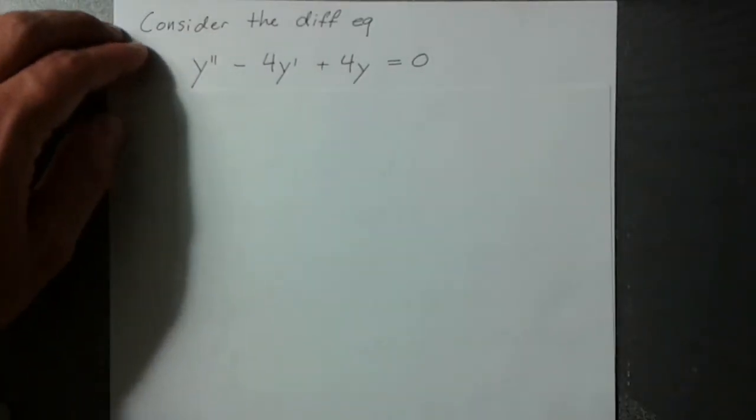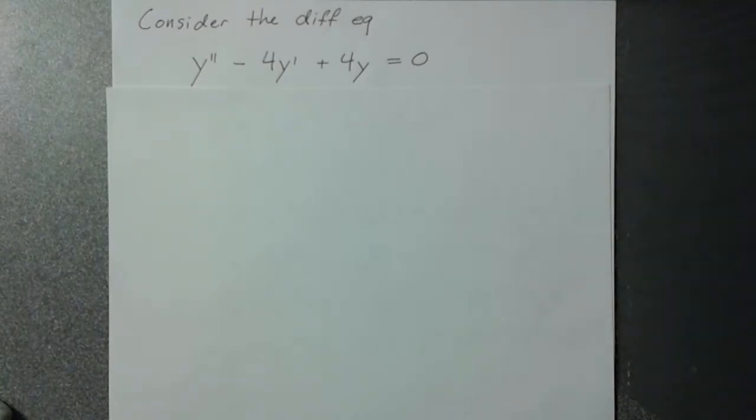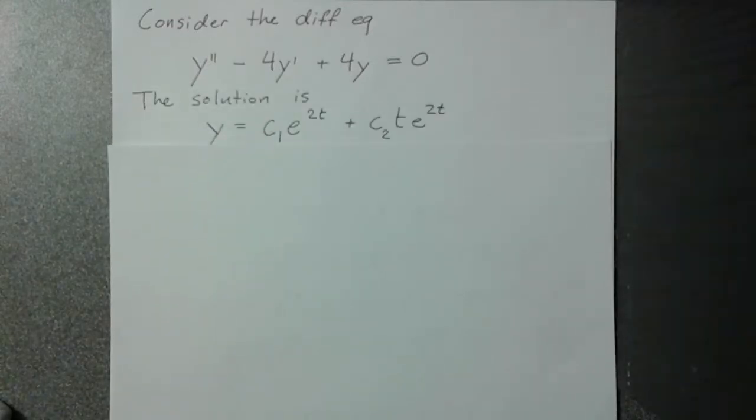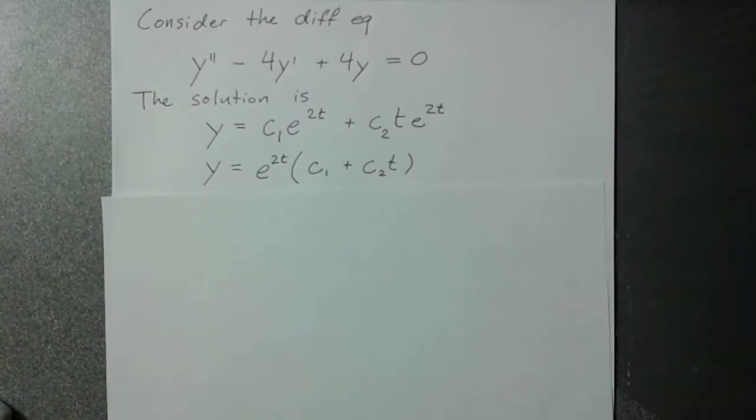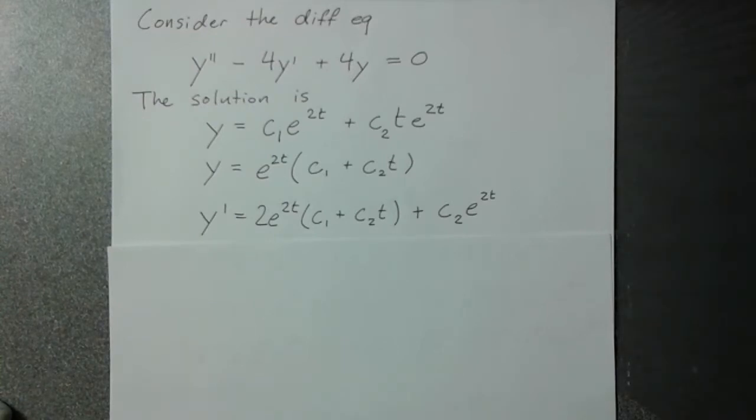So we look at this differential equation, and the idea, using the same exact technique as in video 20, which I recommend you watch first, just going to take this and say, okay, we know what the solution is, we know why it is what it is. Just going to take that, maybe factor out the e to the 2t, and then repeatedly differentiate it.